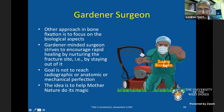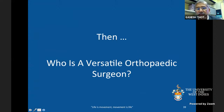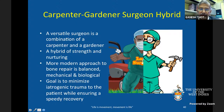The gardener-minded surgeon focuses more on biology, striving to encourage rapid healing by nurturing the tissues — or by totally staying out of the fracture site. The goal here is not to achieve radiographic, anatomic, or mechanical perfection, but rather to fasten the major bone fragments and allow mother nature to do the remaining work. The versatile orthopedic surgeon is a hybrid — a combination of carpenter and gardener — combining strength and nurturing.